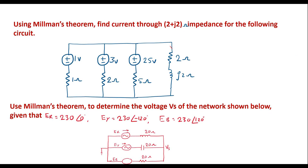In this video let me consider two numericals on Millman's theorem. Using Millman's theorem, find the current through 2+J2 impedance for the following circuit. We are supposed to find the current through 2+J2, and in the second problem, use Millman's theorem to determine the voltage Vs of the network shown below. This is the given circuit; we are supposed to find the value of Vs.